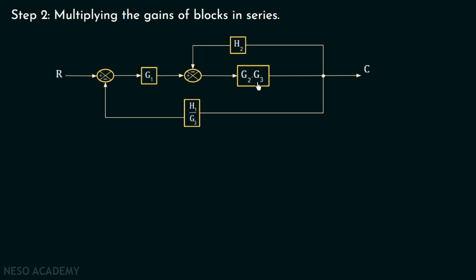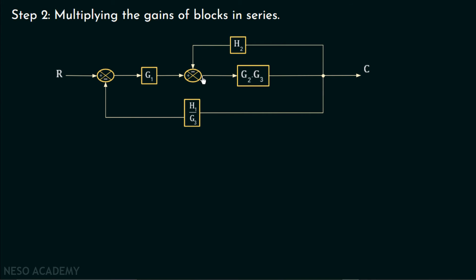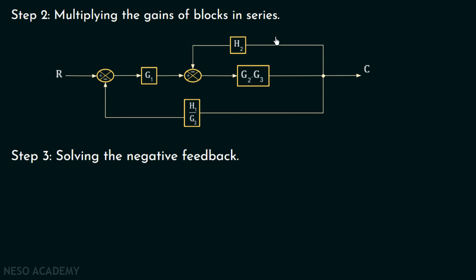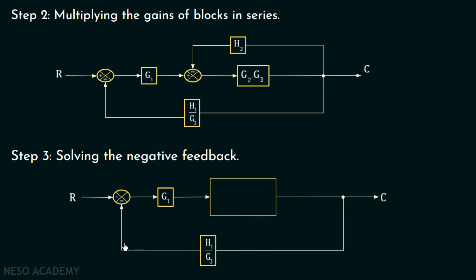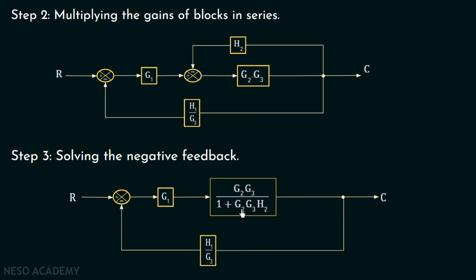Observing the block diagram, we can see this portion is a negative feedback system, and we can convert it into a single block by calculating its overall closed loop transfer function. The closed loop transfer function for a negative feedback system is G(s) over 1 plus G(s)H(s). In our case, the forward path gain is G2·G3 and the feedback path gain is H2. So step 3 gives us a block with gain G2·G3 over 1 plus G2·G3·H2.